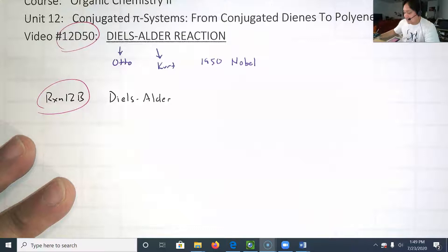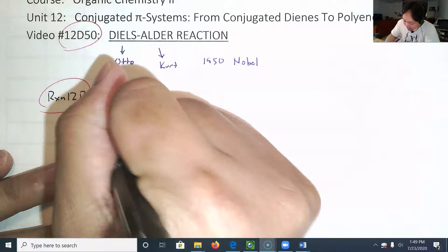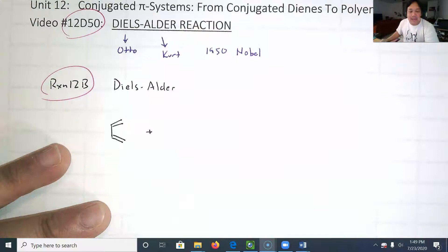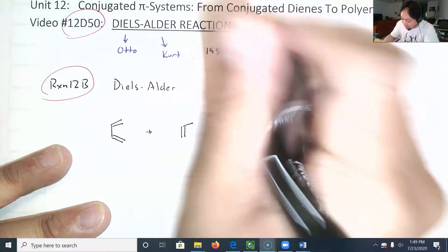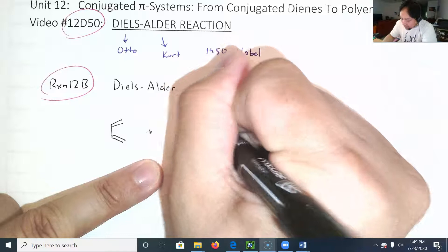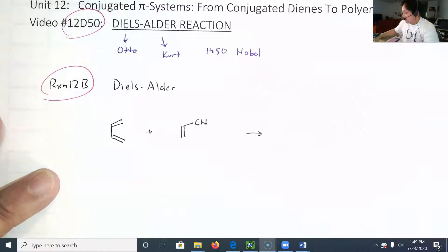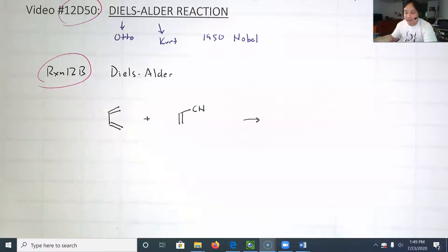A very simple Diels-Alder reaction is basically a diene plus an alkene. I'm drawing the diene a little bit strange, and I'm going to put a cyanide group, a nitrile, on the alkene. The product you get can be tricky at first to draw, so let me give you hints right away.